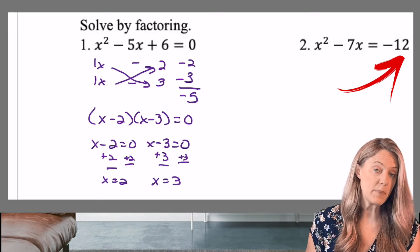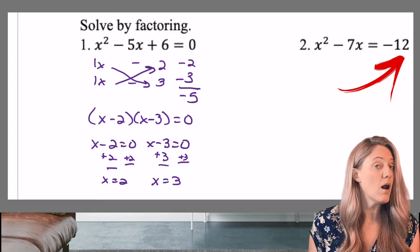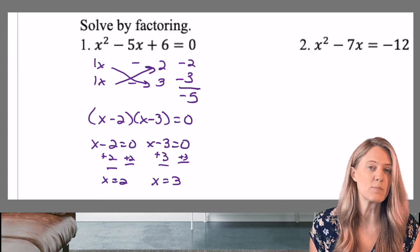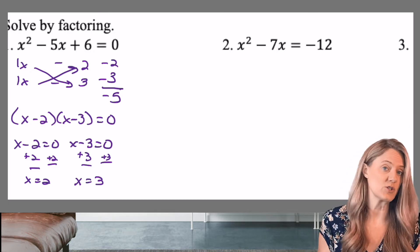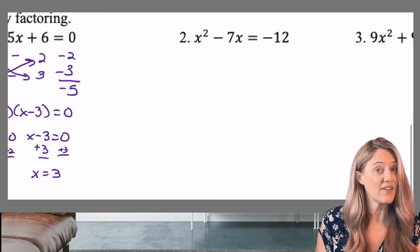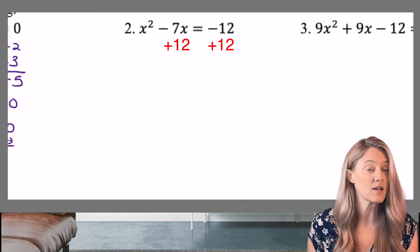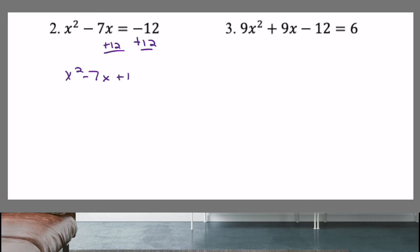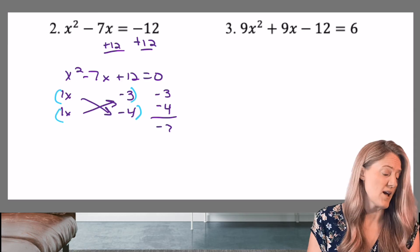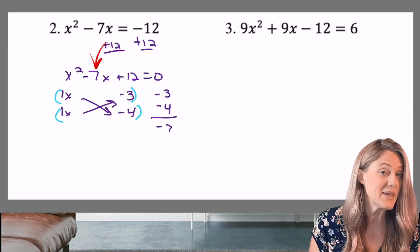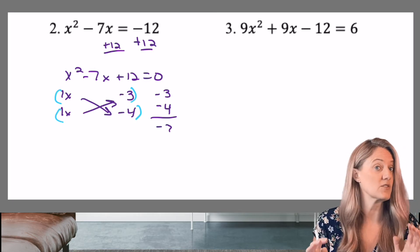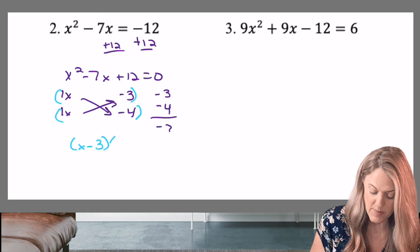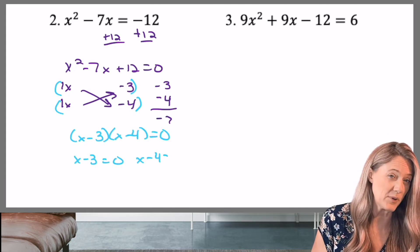As you look at problem two, be careful. Is it set equal to zero? No. Also, keep X squared positive when possible. So I'm first going to go ahead and just add that 12 over so that it's set equal to zero. After it's set equal to zero, go ahead, crisscross, solve it. I hope you're keeping in mind that when we do crisscross, that's how we check that B coefficient. But we always write it straight across in our parentheses for our factors. So X minus three, X minus four, zero product property. And we have our answers.